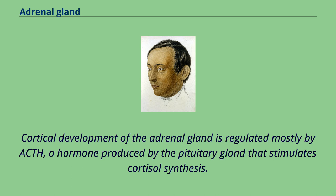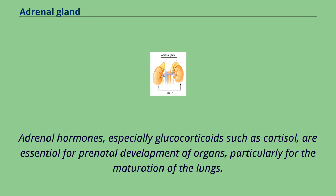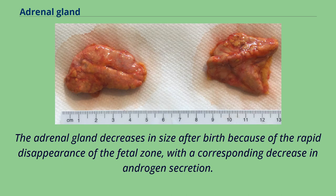Cortical development of the adrenal gland is regulated mostly by ACTH, a hormone produced by the pituitary gland that stimulates cortisol synthesis. During mid-gestation, the fetal zone occupies most of the cortical volume and produces 100–200 mg/day of DHEAS, an androgen and precursor of both androgens and estrogens. Adrenal hormones, especially glucocorticoids such as cortisol, are essential for prenatal development of organs, particularly for the maturation of the lungs. The adrenal gland decreases in size after birth because of the rapid disappearance of the fetal zone, with a corresponding decrease in androgen secretion.